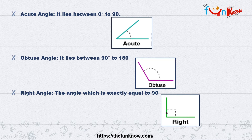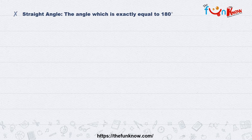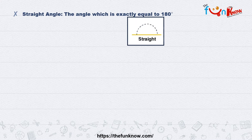This is what exactly right angle is. Acute angle was less than a right angle; obtuse angle was greater than a right angle but less than 180 degrees. Right angle is equal to exactly 90 degrees.